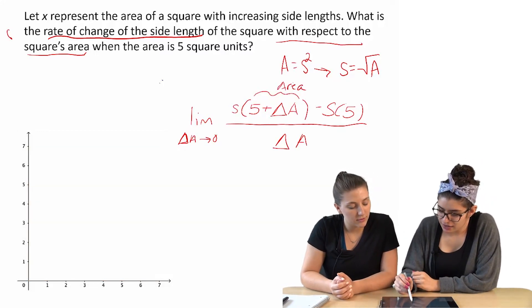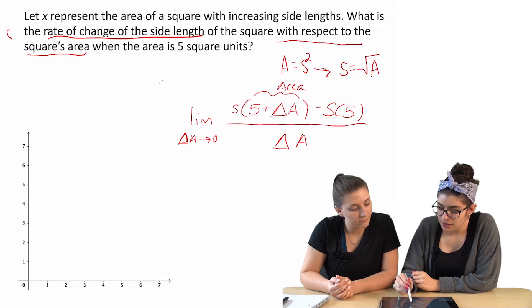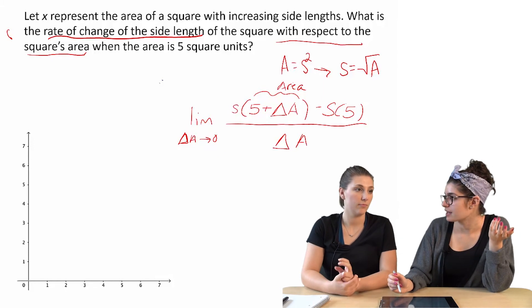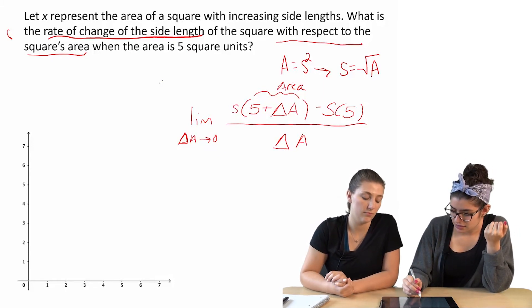So we know that if we have s of 5 plus delta a, that's just asking what is the side when the area is 5 plus delta a.